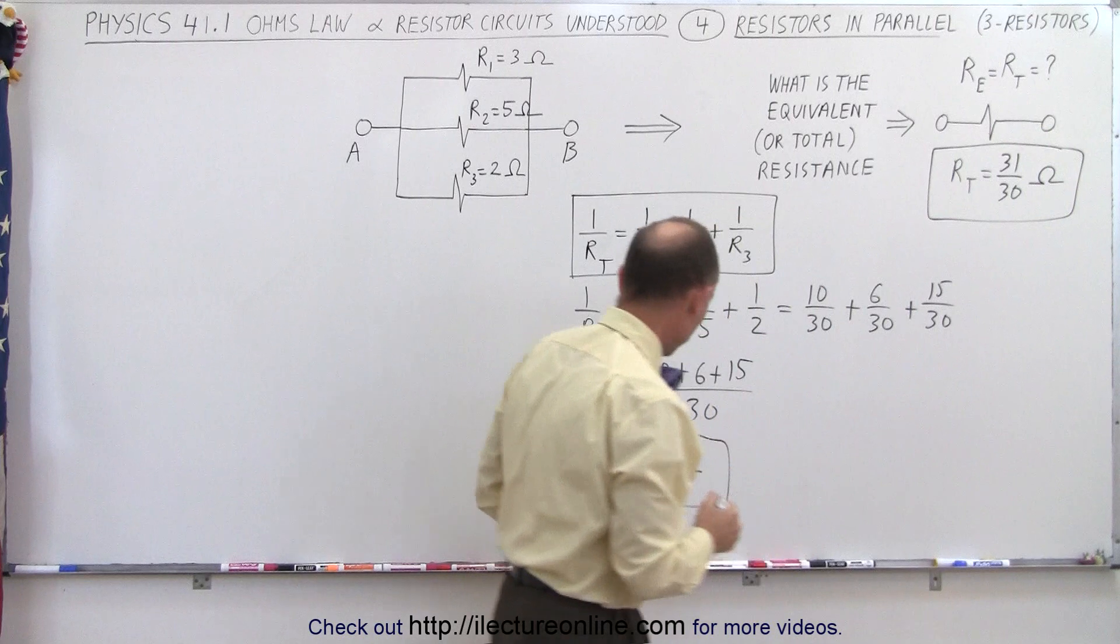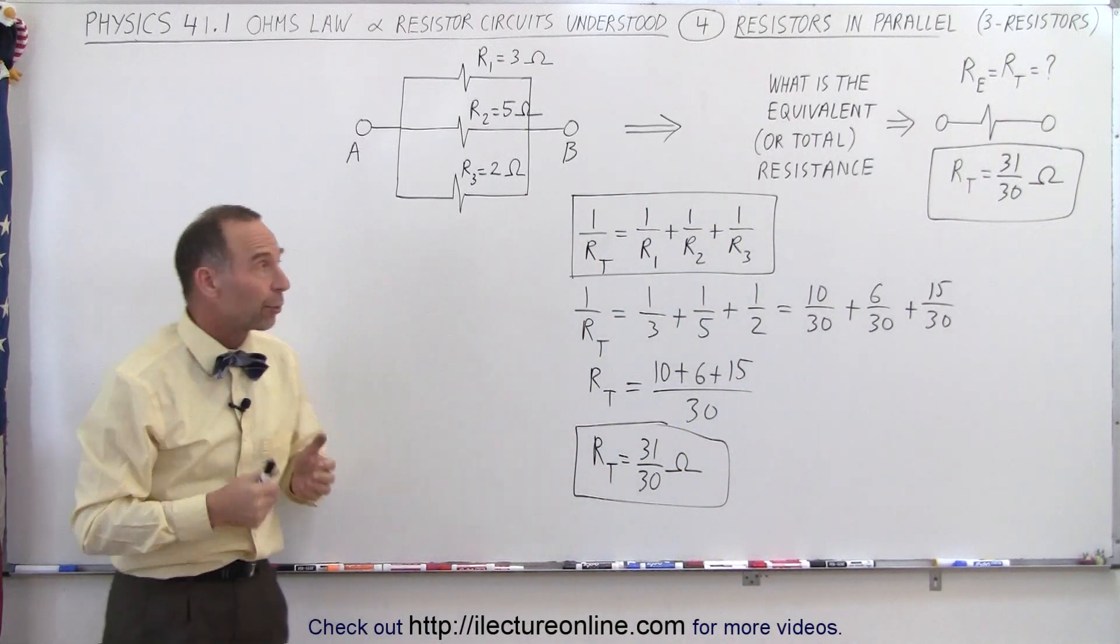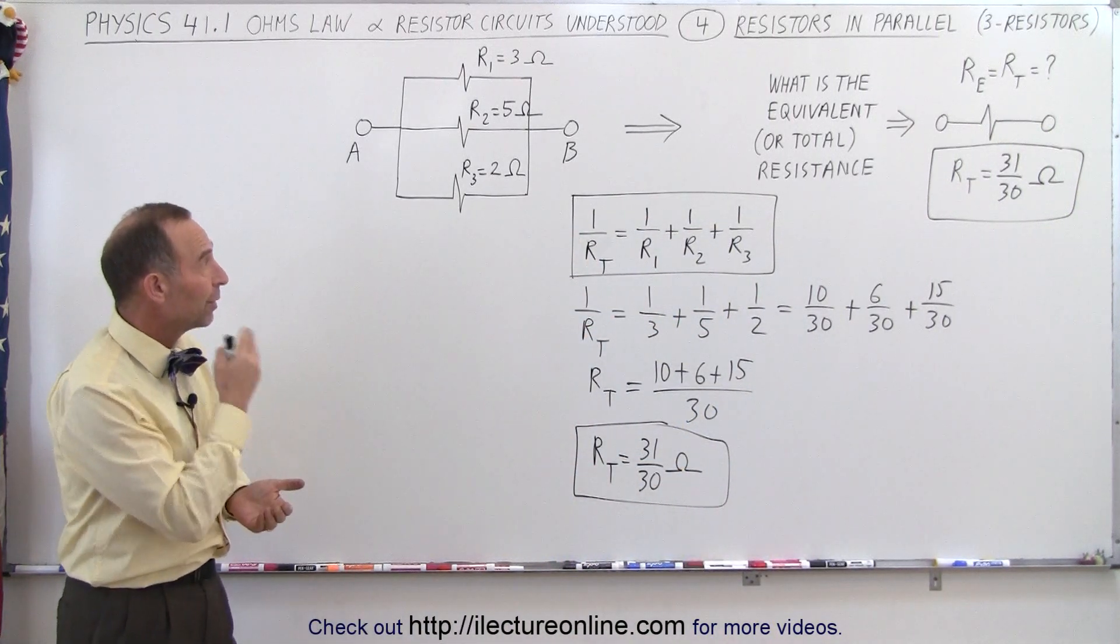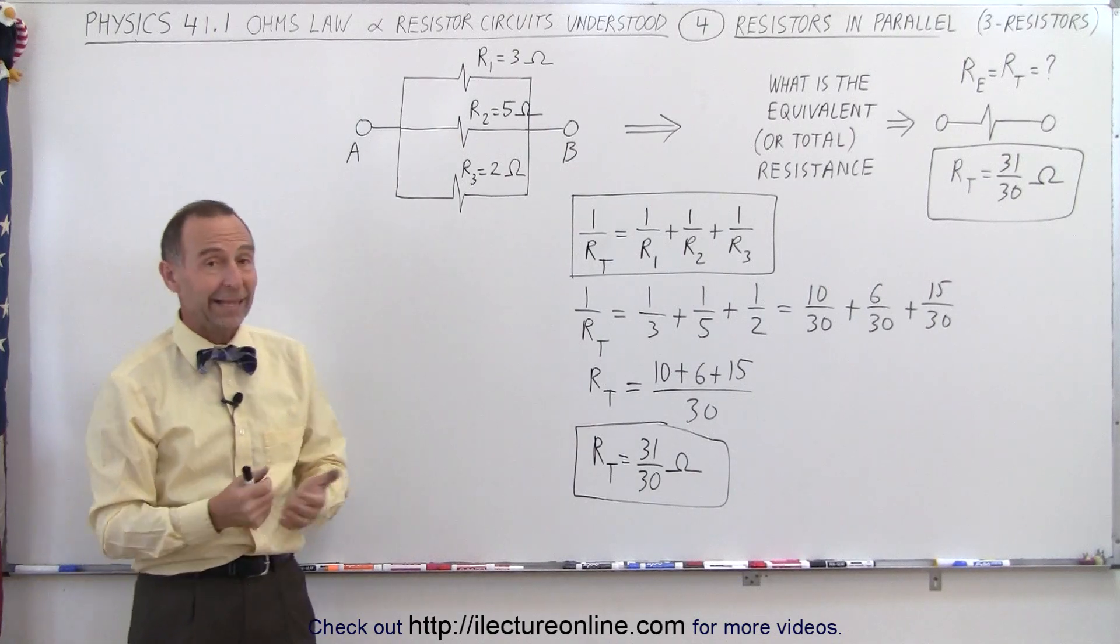There we go. So, that's how we add up and find the equivalent resistance of three resistors in parallel. And that's how it's done.